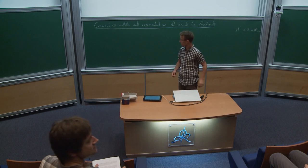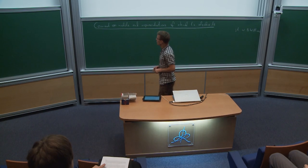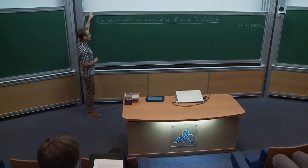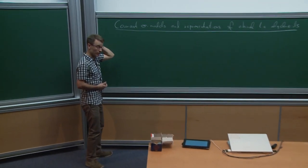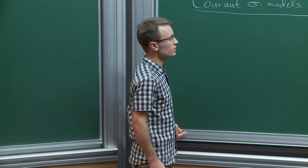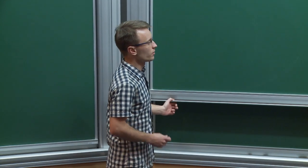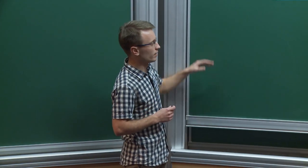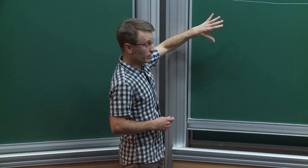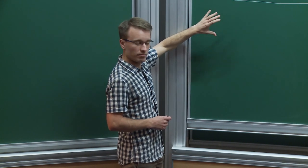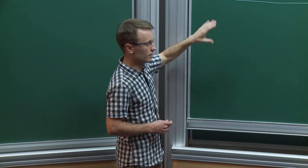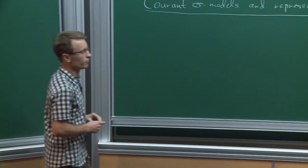Thanks, and thanks for the invitation. So I want to talk about the ongoing joint work with Brian Williams on current sigma models and their interpretation in terms of representations of Courant algebroids. I'm going to begin with listing some of the main players in this talk. I will not say much about them at first — this is just going to be an introduction, and then I will say a few more precise things.